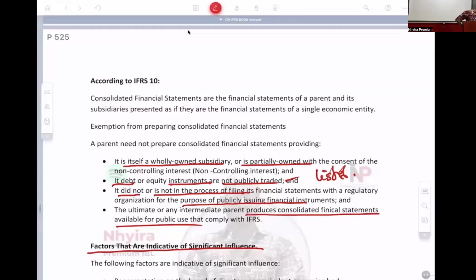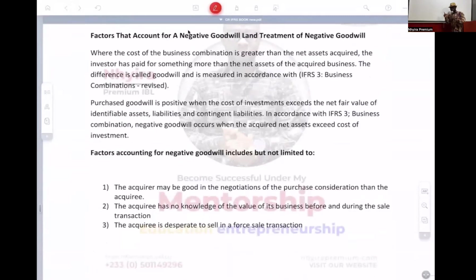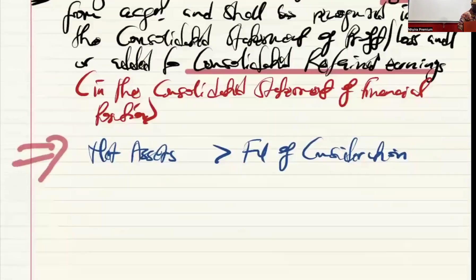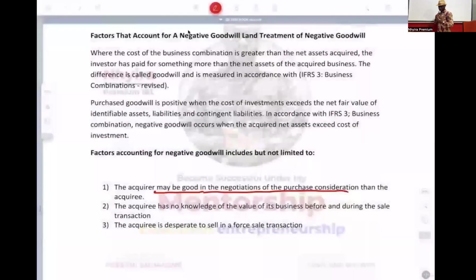One, the acquirer may be good in the negotiation of the purchase consideration. That's the first thing. So maybe we negotiated the deal well. So yes, we saw that the net asset of the company was $100 million, but we negotiated the deal and paid $90 million. So we are good negotiators. This one is not about negotiation to buy rotten tomatoes in the markets like some women do. Good negotiation skill.